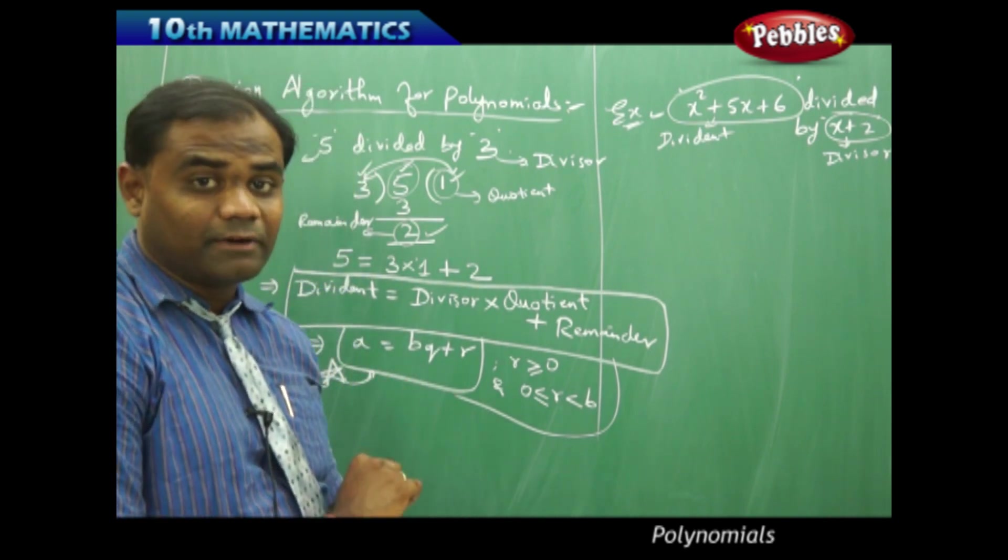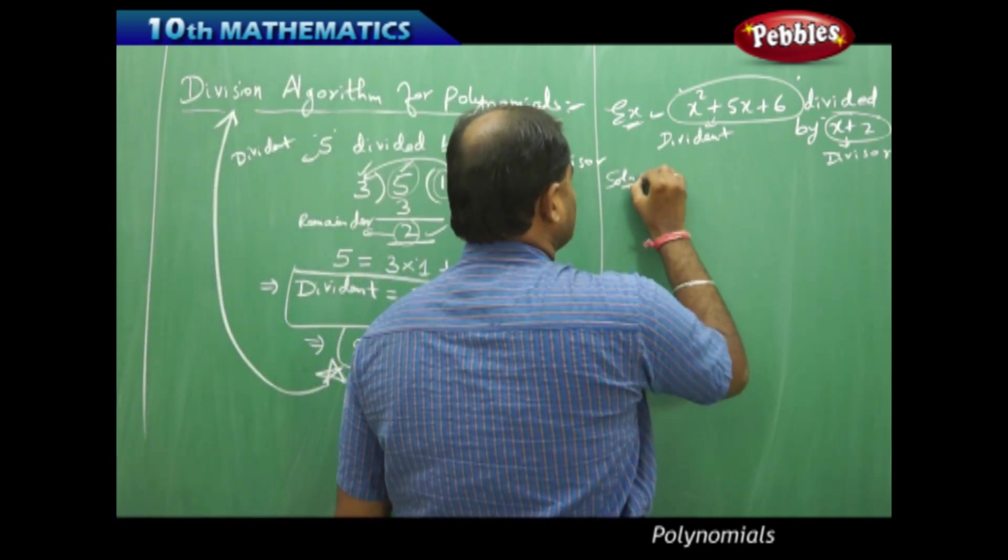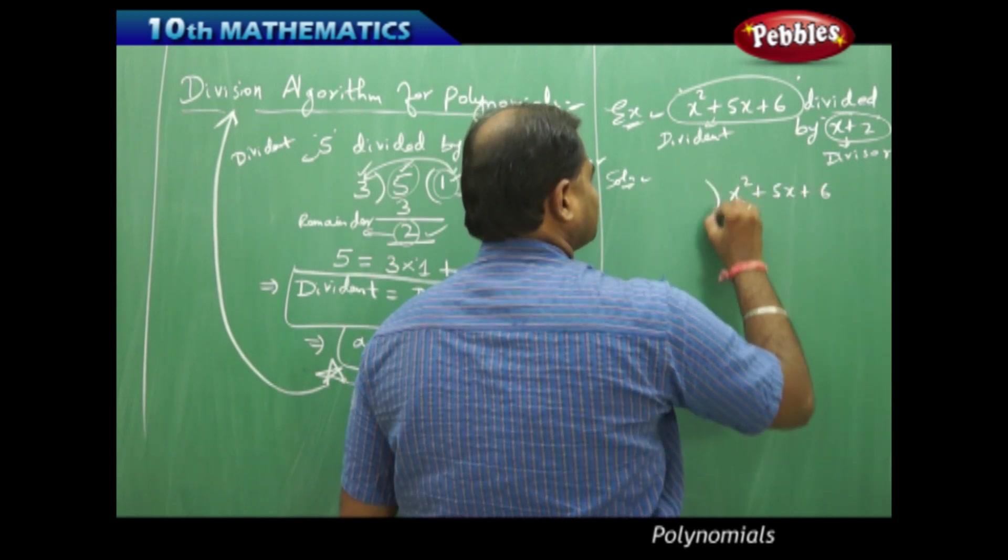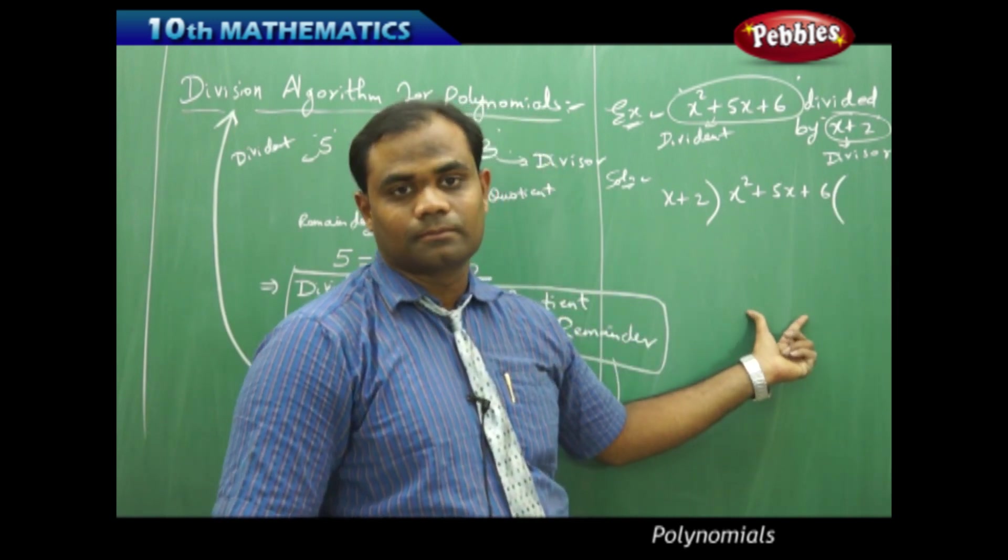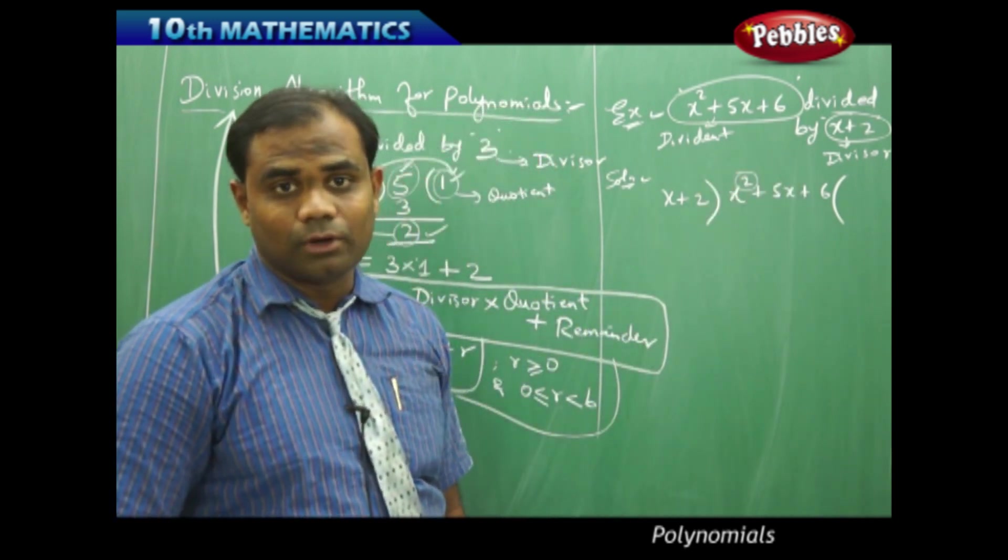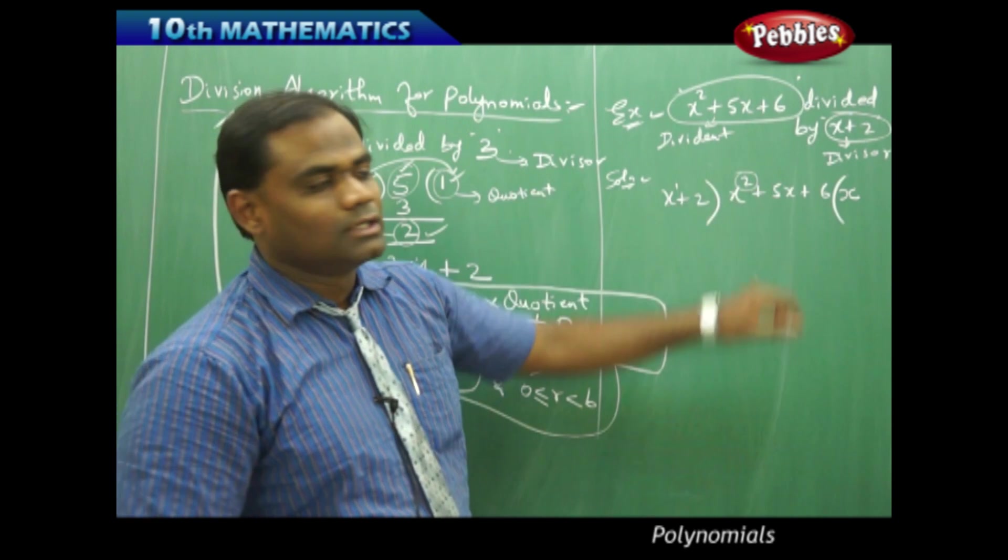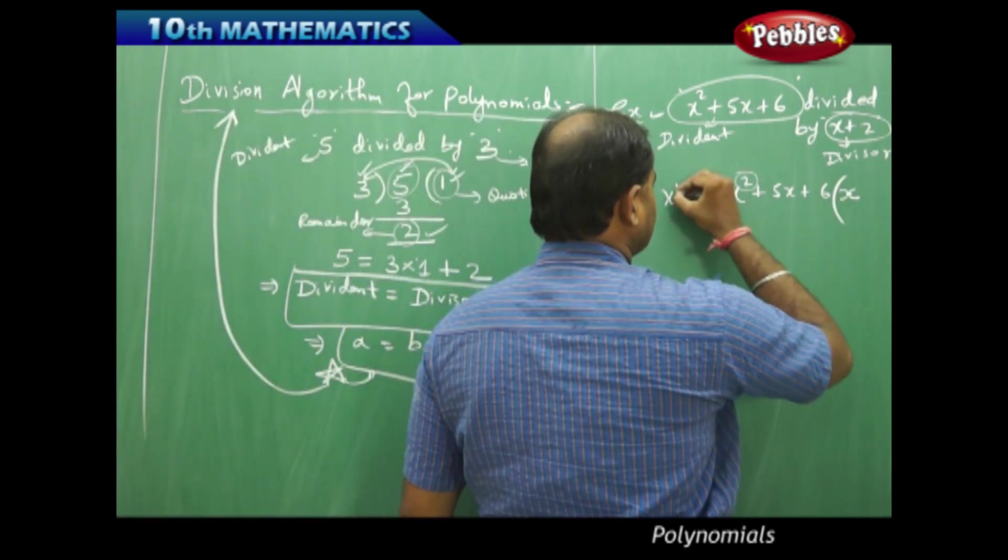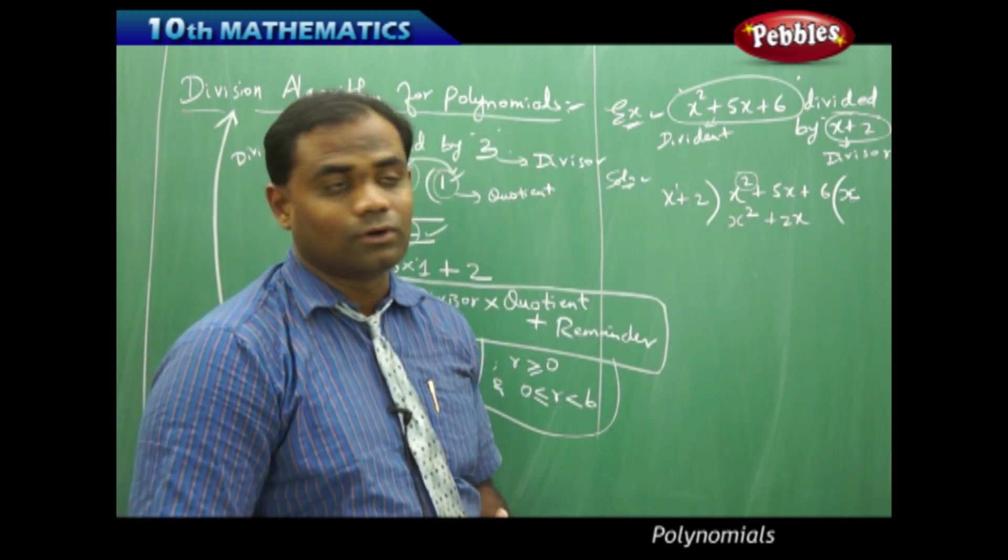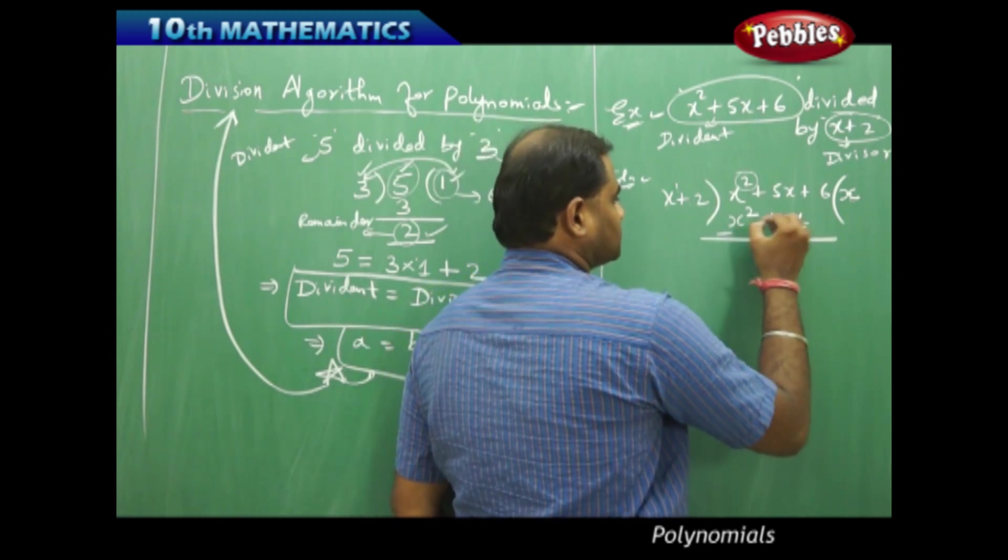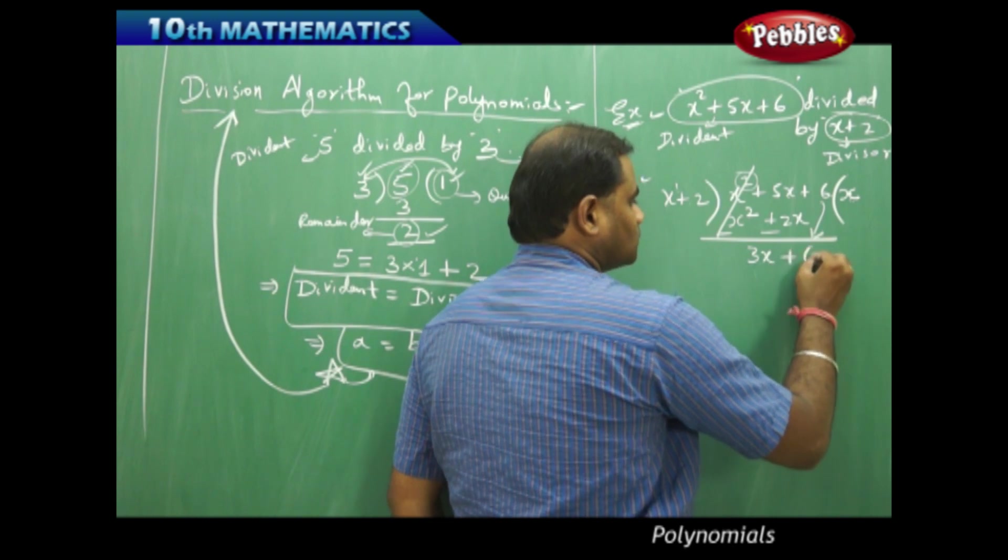When we want to verify the division algorithm, let's divide one polynomial with the other. When I divide x squared plus 5x plus 6 with x plus 2, let's see what will be the quotient and remainder. Because the highest power here is 2, being the quadratic polynomial, I multiply with x to make this x squared. When I put x here, I multiply this with x plus 2 so that x times x is x squared and x times 2 is 2x. This is how we proceed in division of polynomials. When I subtract, this gets cancelled and 5x minus 2x gives 3x with 6 carried forward as plus 6.